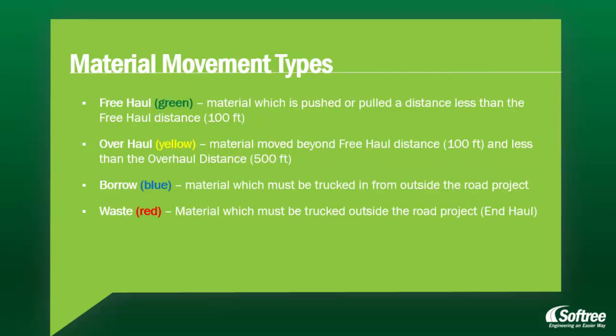The Mass Haul Diagram has its material movement types color-coded. Free Haul is shown in green — this is material which is pushed or pulled a distance less than the free-haul distance, which is by default set at 100 feet. Overhaul material is shown in yellow, and this is material which is moved beyond the free-haul distance of 100 feet and less than the overhaul distance, which by default is set at 500 feet. Material that is borrowed is shown in blue, and this is material that must be trucked in from outside the road project. Waste, also known as End Haul, is shown in red, and this is material which must be trucked outside the road project.